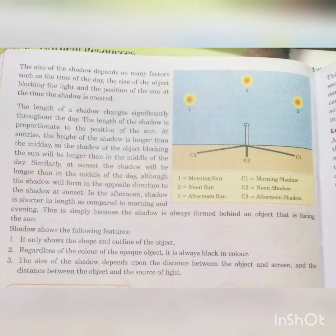In the afternoon, shadow is shorter in length as compared to morning or evening — noon mein, dopahar mein, shadow chhota hota hai. This is simply because shadow is always formed behind an opaque object — kyunki shadow jo hai, opaque object ke hamesha peeche banta hai.